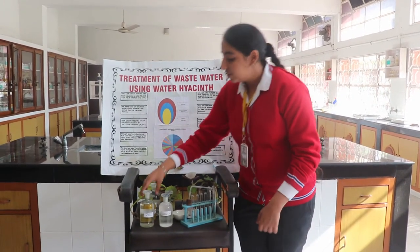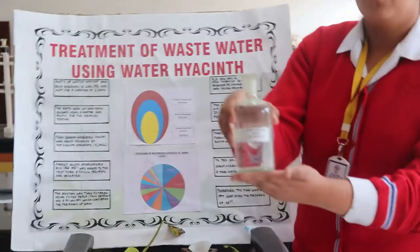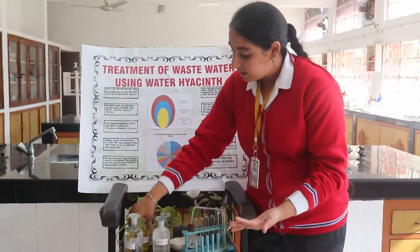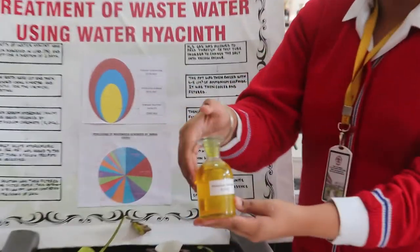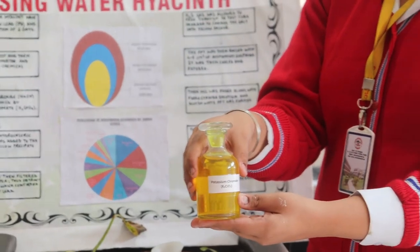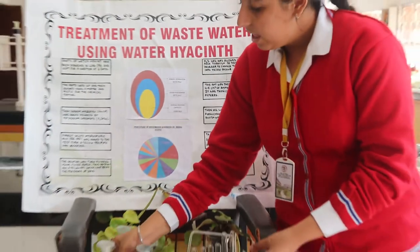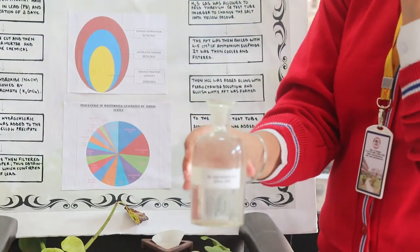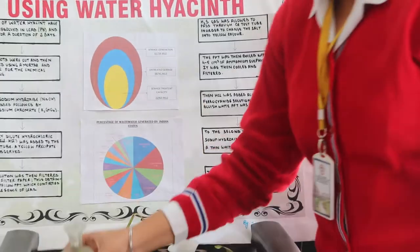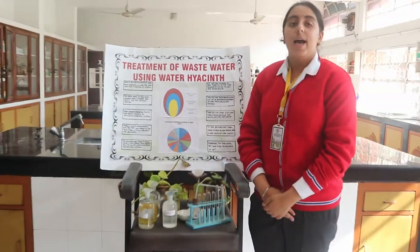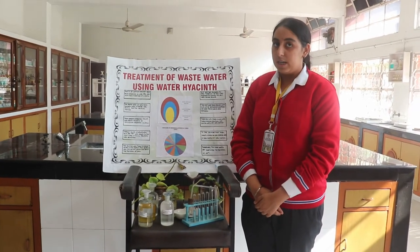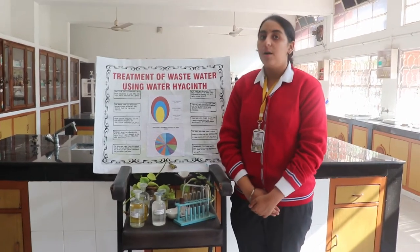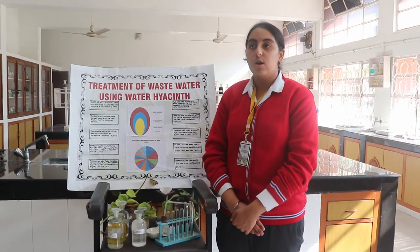Then some sodium hydroxide was added, followed by some potassium nitrate. Next, some dilute hydrochloric acid was added. The precipitate was then filtered, and due to the yellow colour, it was confirmed that the roots of water hyacinth had absorbed the lead.